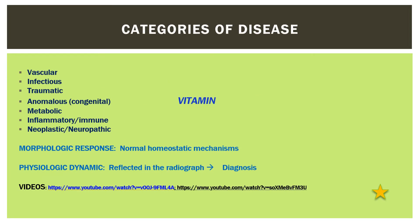Superimposed on this normal evolution, the listed disease processes occur: vascular, infectious, traumatic, anomalous or congenital, metabolic, inflammatory immune, and neoplastic neuropathic — spelling the word VITAMIN.